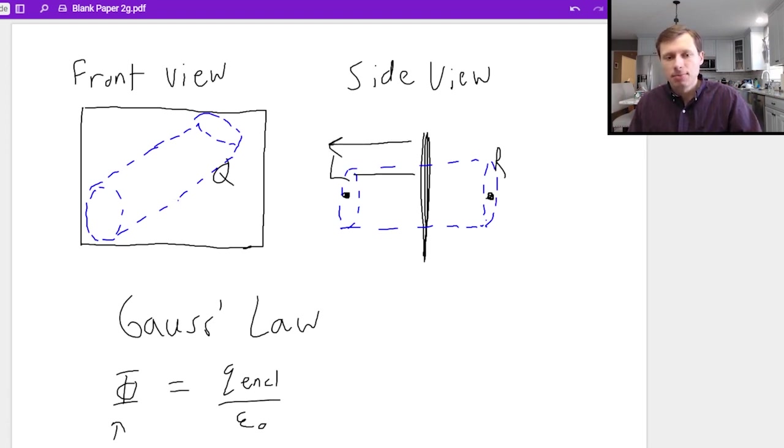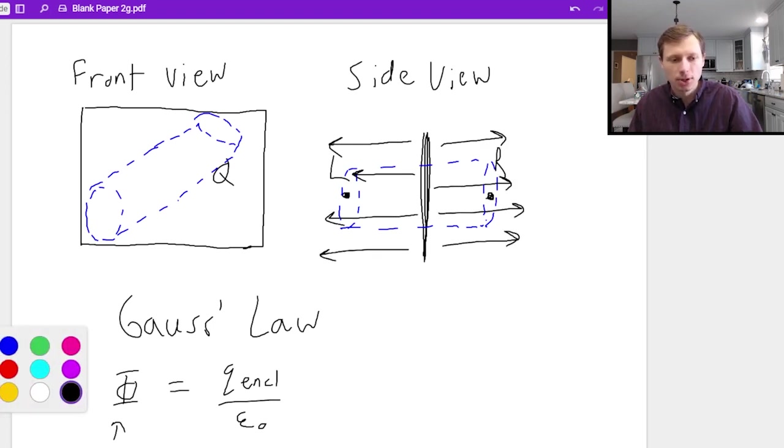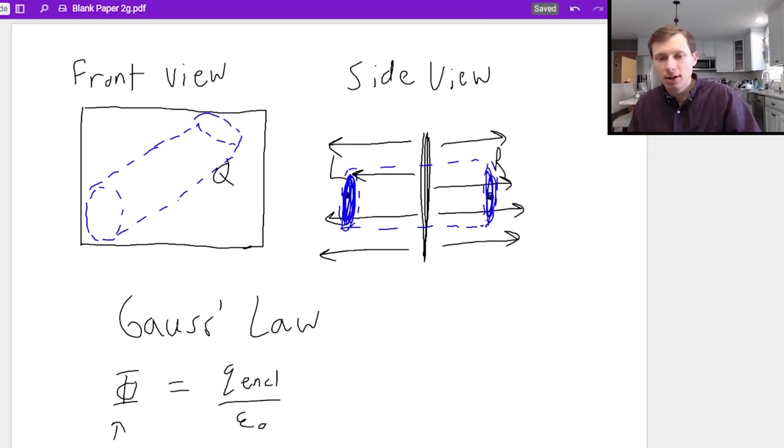They're going to look something like this. And so as you can see my electric field lines are going perfectly through the faces of my cylinder, these two faces right here. The electric field lines are going perfectly through them and they're not going through the sides of my cylinder which means I can ignore that for Gauss's law. Again I only need to worry about my two faces.